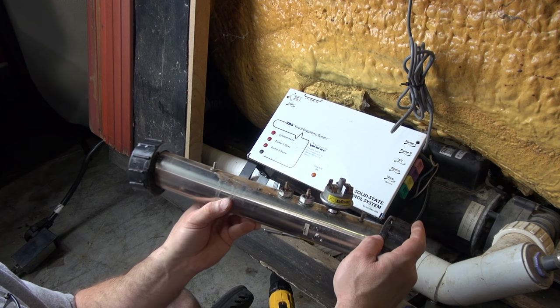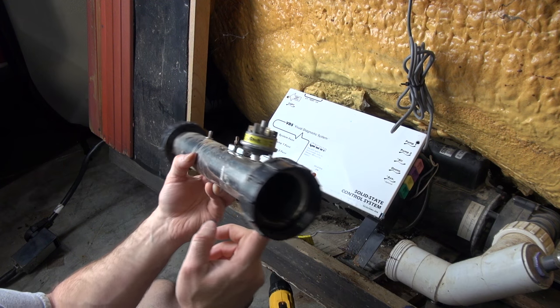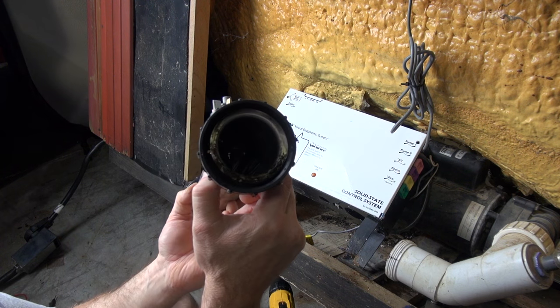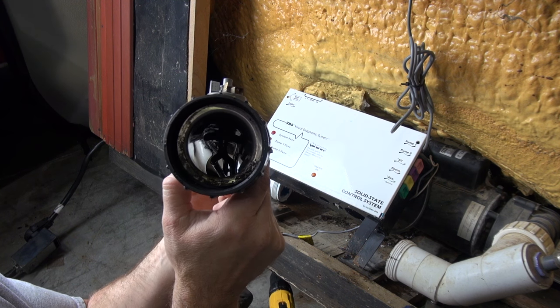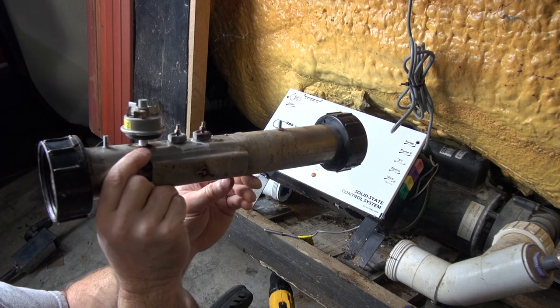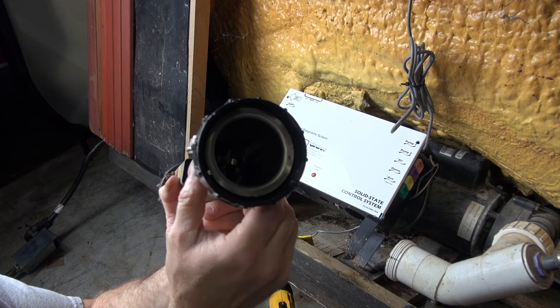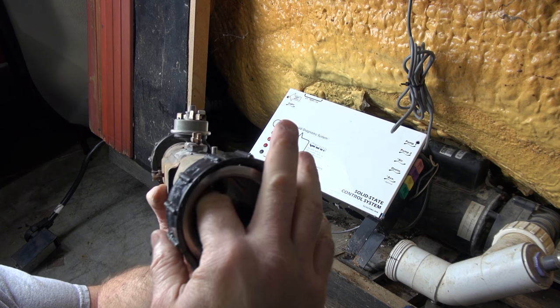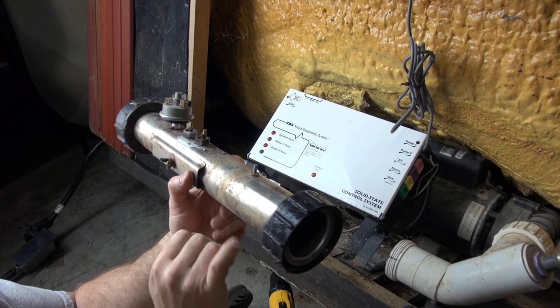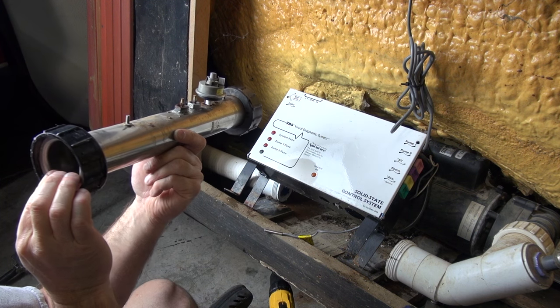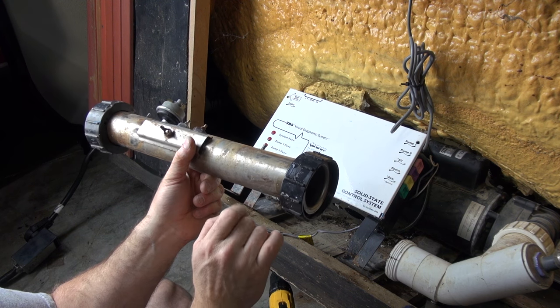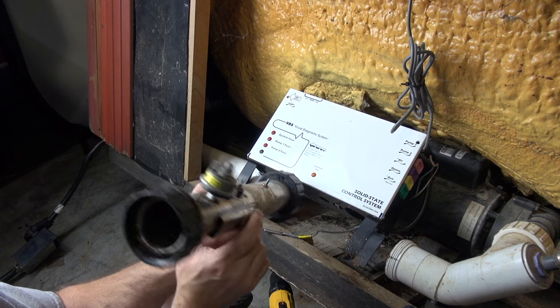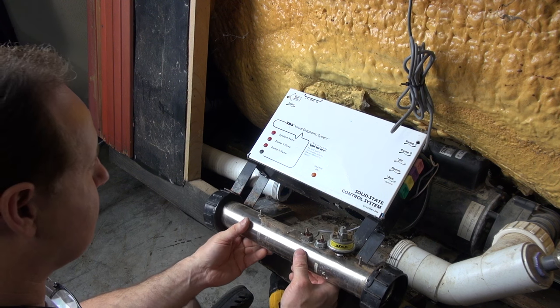So there is the heater element itself is in this tube. So what I'm going to do is let you see down the tube, and you can see that whoever put that element in the last time let it touch the side and that is a no-no. You have to hold your finger in there because what it does is it overheats the tube and it cuts down on the heating efficiency. It'll discolor the tube like it did right there.